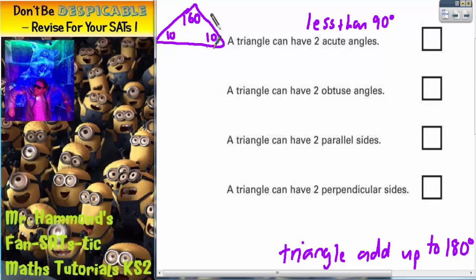These two are acute. So therefore, we've found one example with two acute angles. So we can tick it.